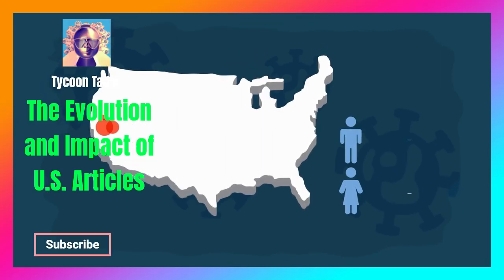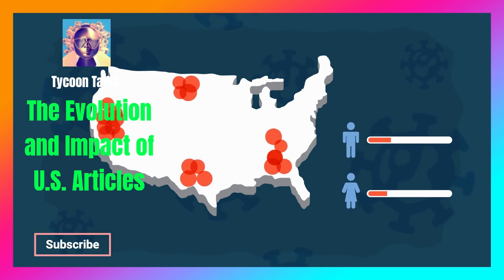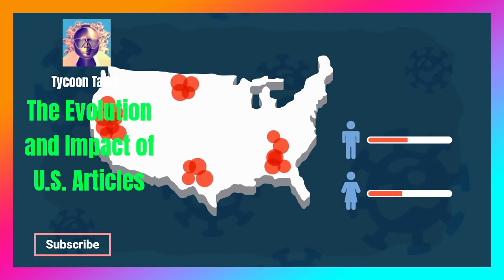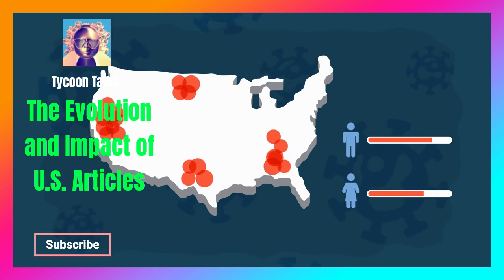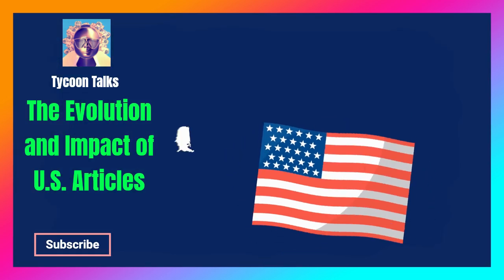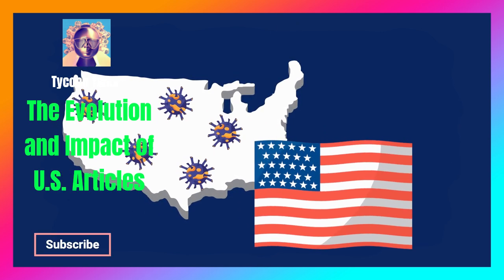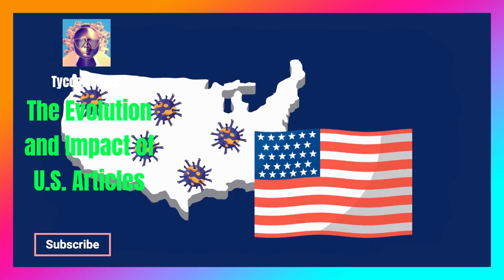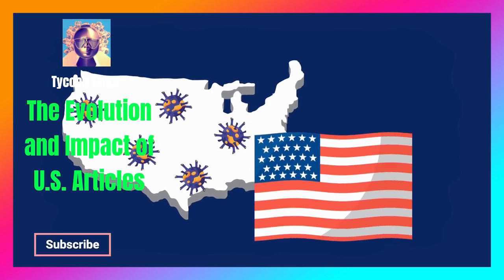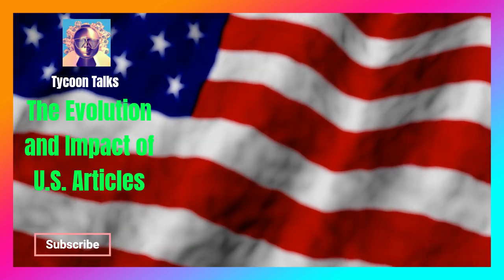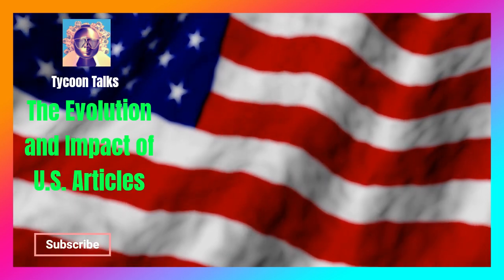The evolution and impact of U.S. articles, from founding documents to modern interpretations. The United States of America, since its inception, has relied heavily on written documents to define its ideals, laws, and governance structure. These documents, often referred to collectively as U.S. articles, have played a crucial role in shaping the nation's history and identity. From the seminal Declaration of Independence to the intricate statutes of the Constitution, each document has left an indelible mark on the country's trajectory and the global landscape.